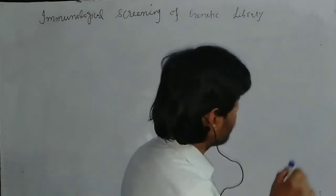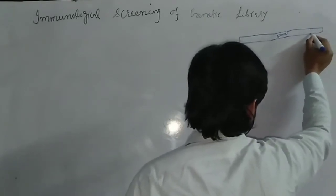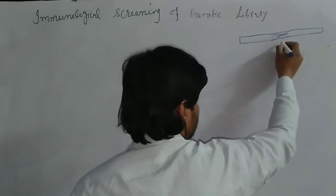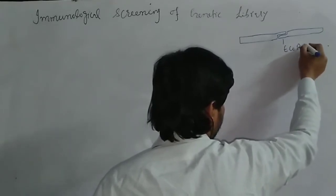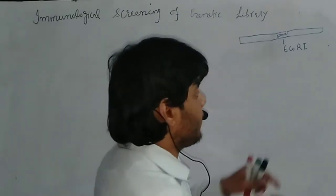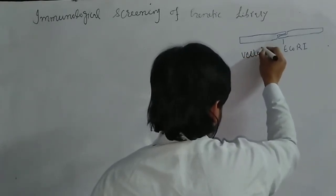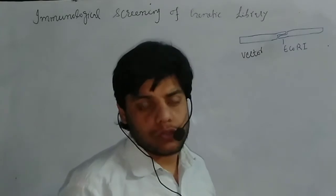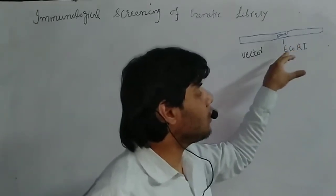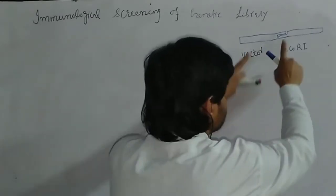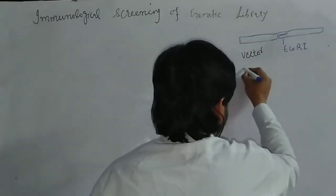Let's suppose this is the vector, and this is the restriction site of the vector, which we call EcoR1. What we are going to do is treat this vector with EcoR1. Once we cleave it, the vector DNA becomes separated from each other, and we get a sticky end.